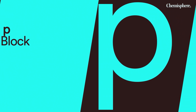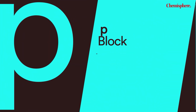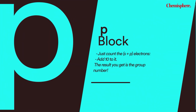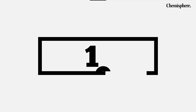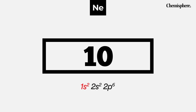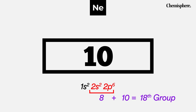What about p block? To find the group of a p block element, we have to add the s electrons and the p electrons of the valence shell and then add 10 to it — that gives us the group number. For example, for the element 1s2, 2s2, 2p6: when we add the s and p electrons of the valence shell, which is 2s2 and 2p6, the total is 8. Adding 10 to it gives us a group number of 18.